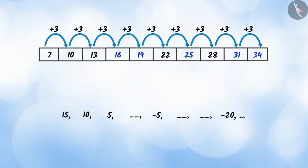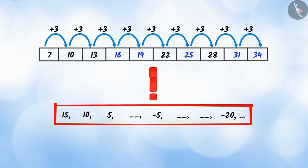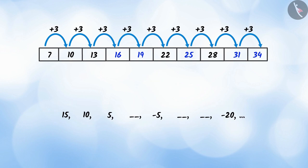Let us see this number list. Do you see any pattern here? Yes. Here, the next number is obtained by adding negative 5 to the previous number. We can also fill the empty spaces in this list by following the same pattern or rule.